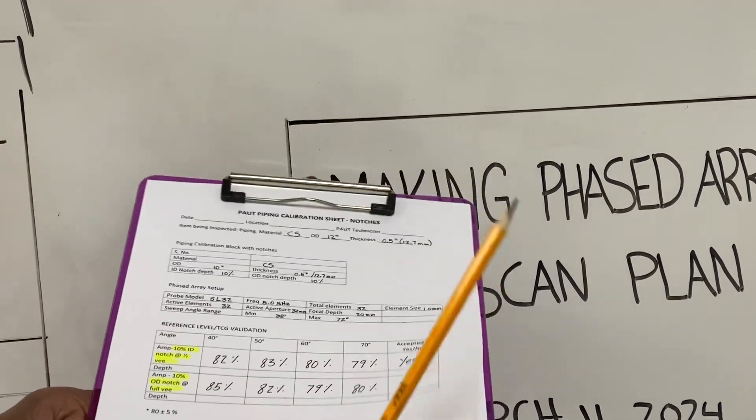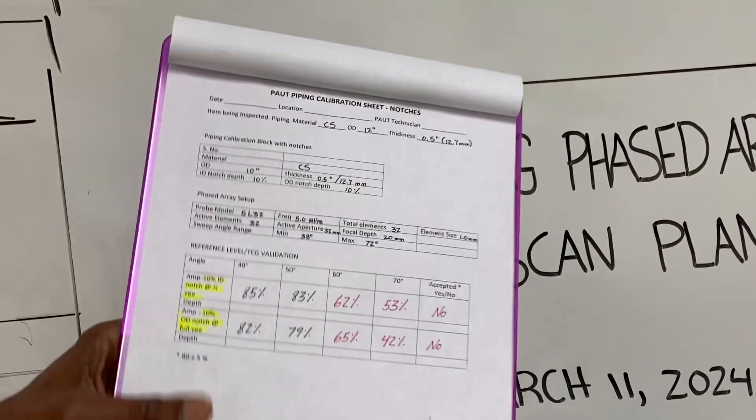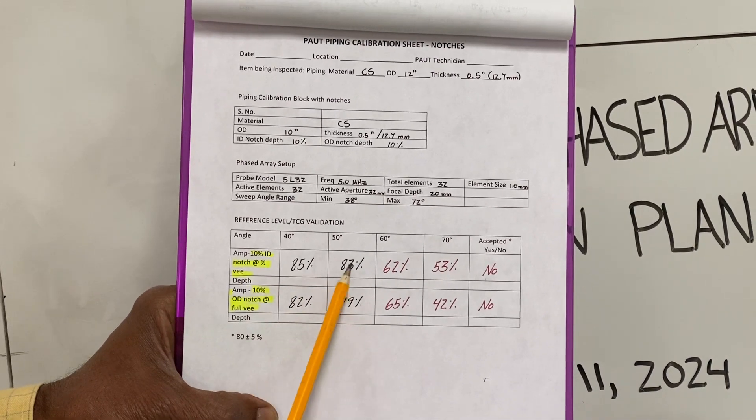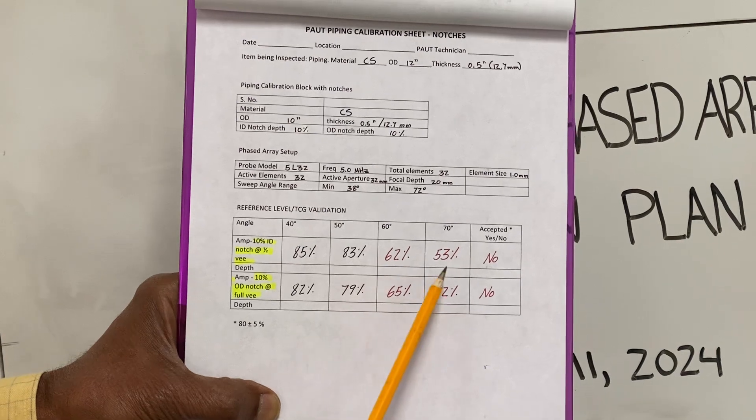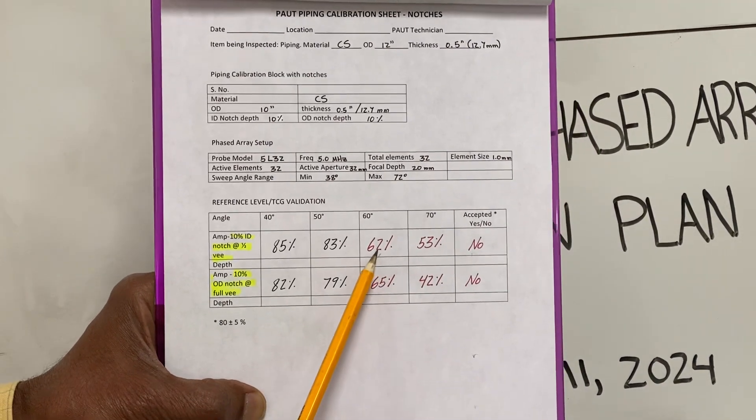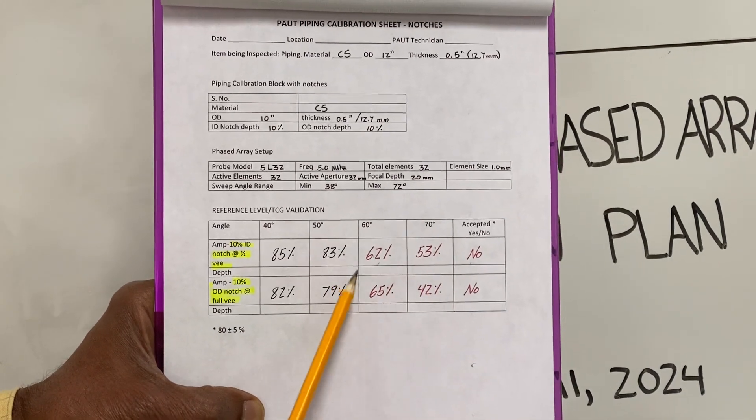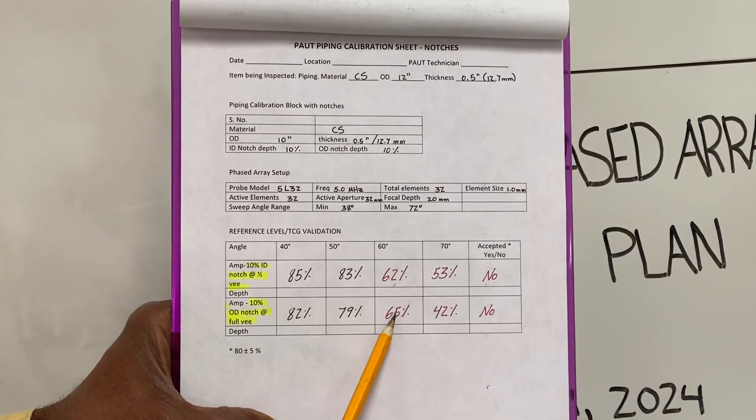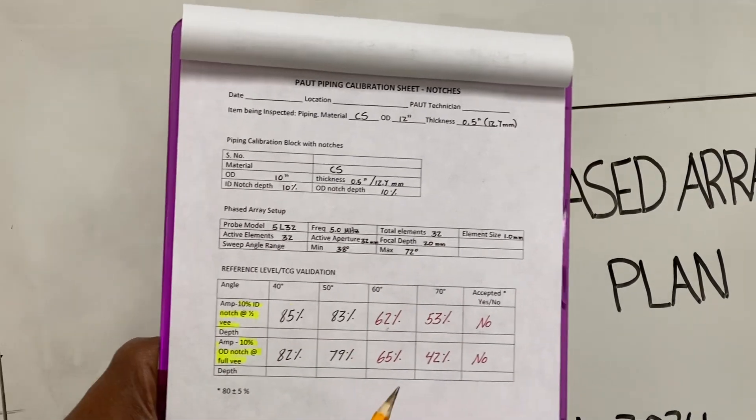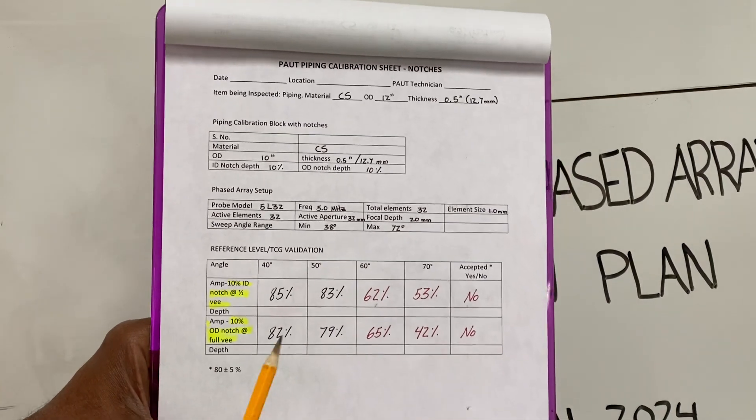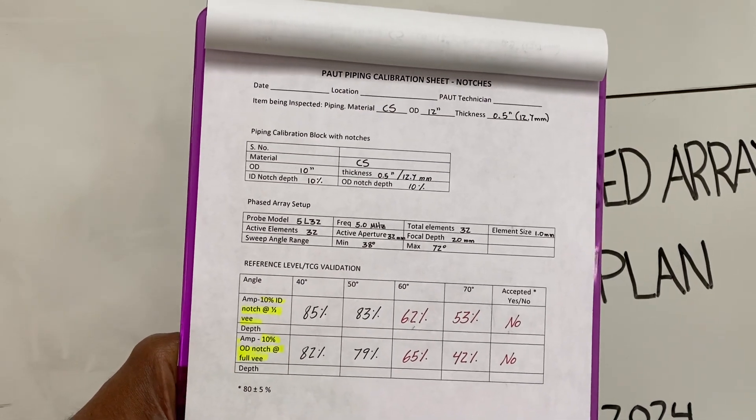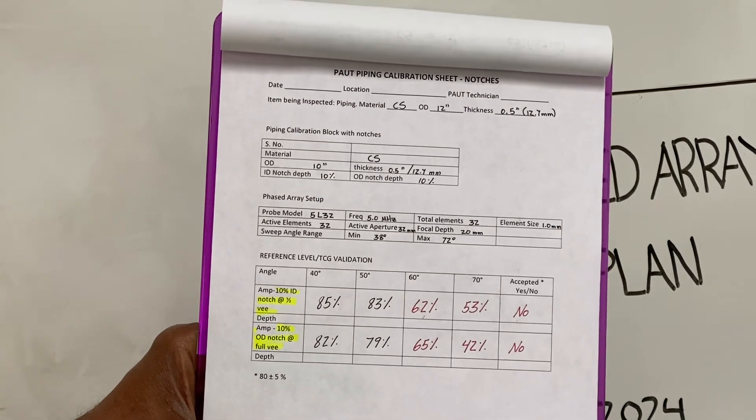Now what we have is an unacceptable calibration, which is shown here. In this case, we have at 40 and 50 it is acceptable, it's like 80% and 83%. However, at 60 degrees and at 70 degrees, we are getting amplitudes which are significantly lower than 80%. Here we have 62% and 53%. So if you get these kinds of numbers on the ID notch and the OD notch, then this calibration is not acceptable. So this is step number one, as far as the PAUT inspection is concerned, is to make sure that you have a valid calibration and your TCG is showing 80% for all the angles and for all the depths.